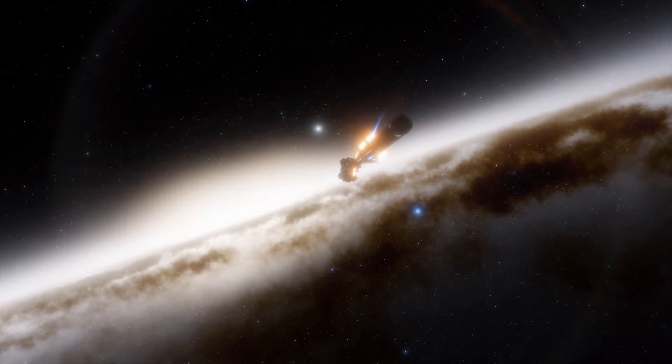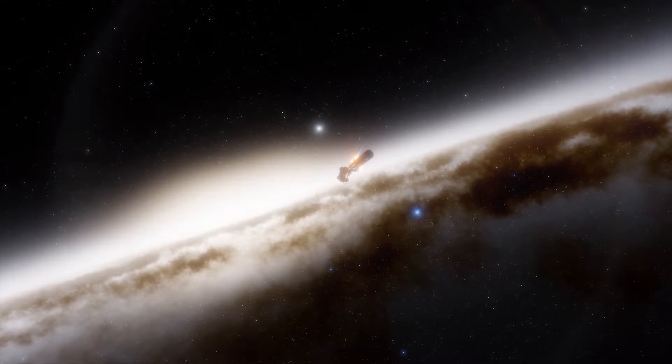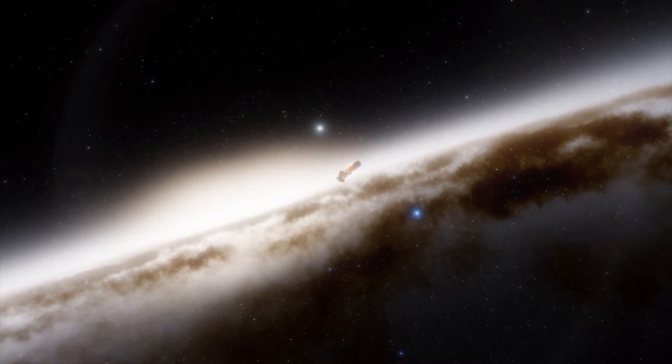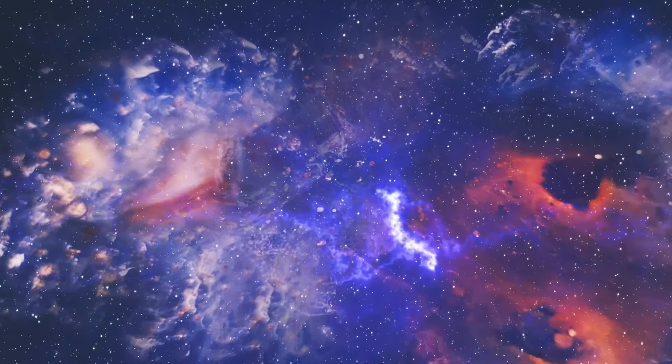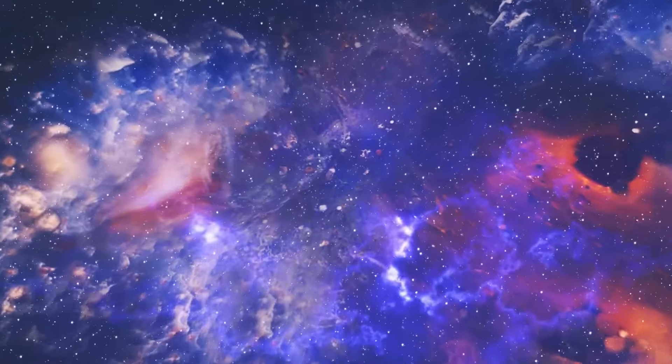Imagine a star so massive it could engulf our solar system. Betelgeuse, at 10 million years old, is much younger than our sun. But its immense size means it burns through its fuel faster, leading to a shorter life.